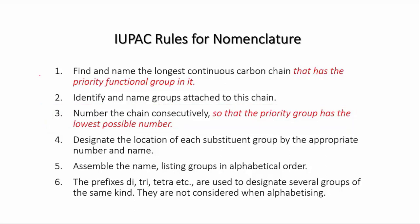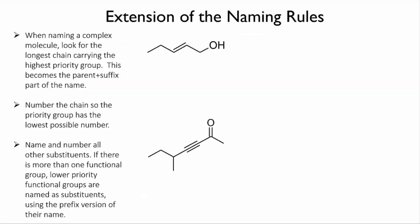Some fairly easy ones first, to show you how to deal with alkenes and alkynes that have extra functional groups. Here we have something that's both an alkene and an alcohol. Alcohols come further up the priority list, so the name is going to end in '-ol'. There are five carbons, so it's based on pentane, but there's a double bond, so that makes it pentene. And then we add the '-ol' and that gives us pentenol.